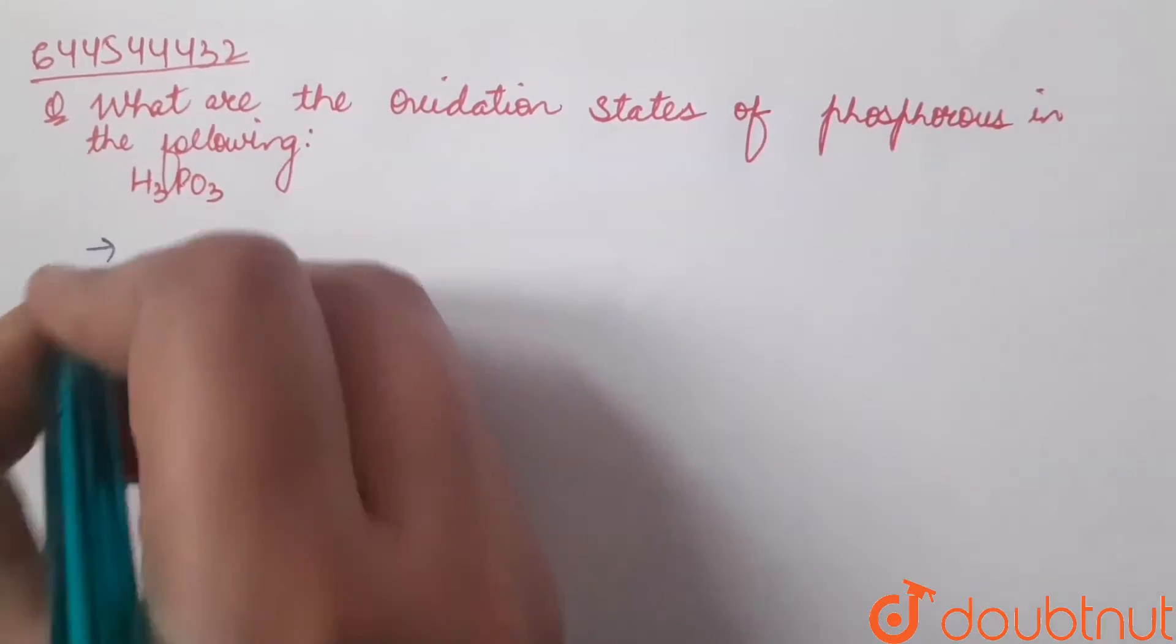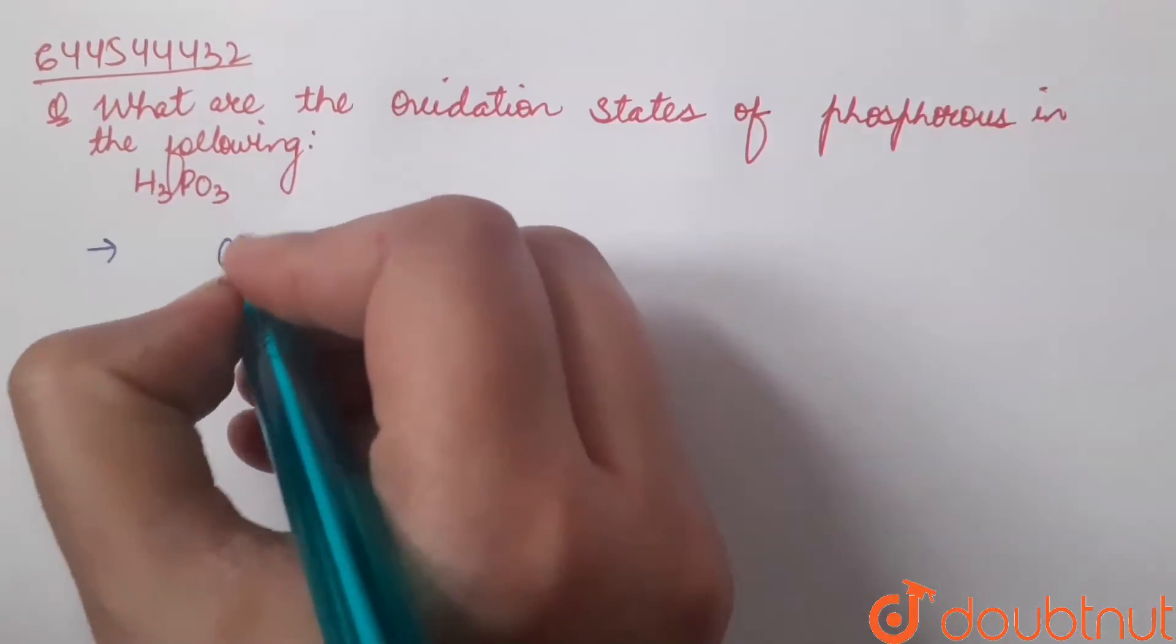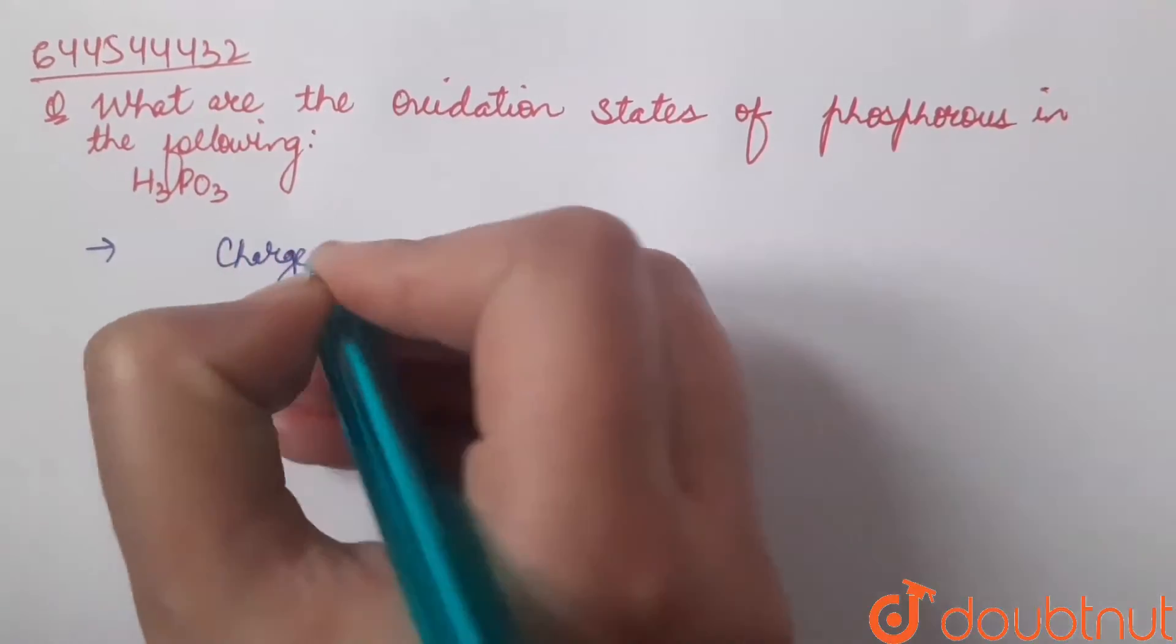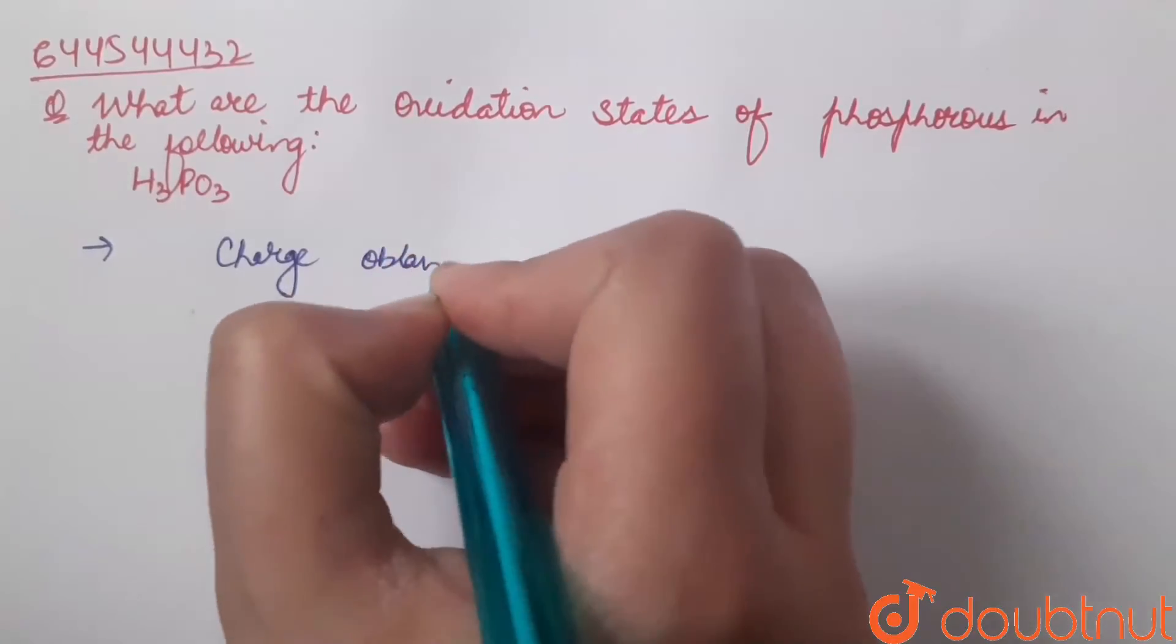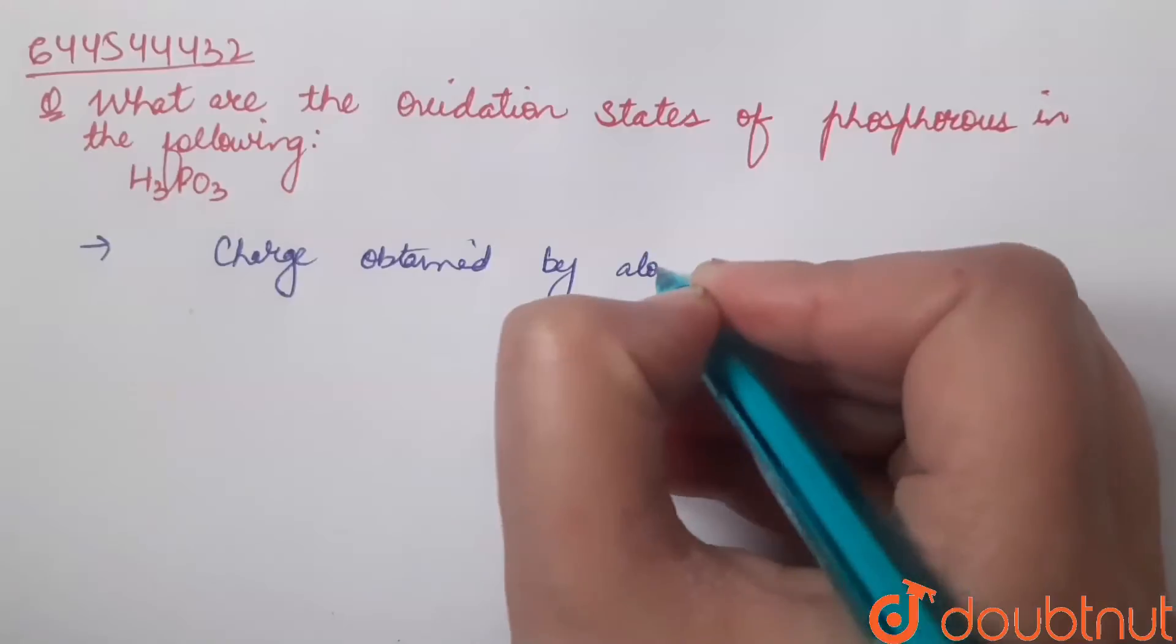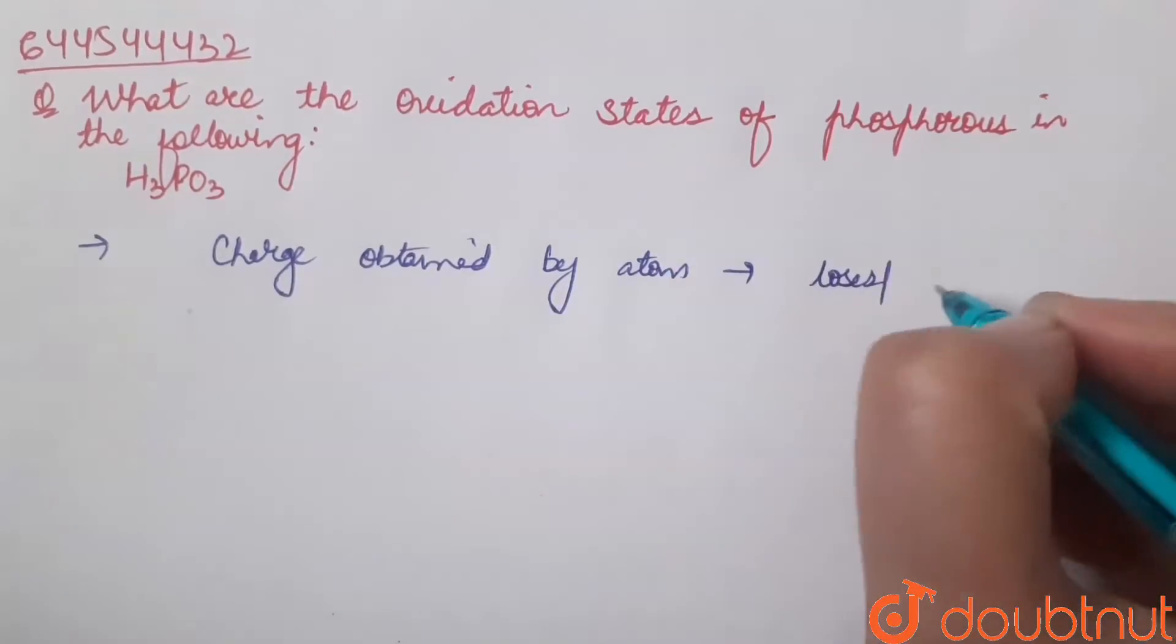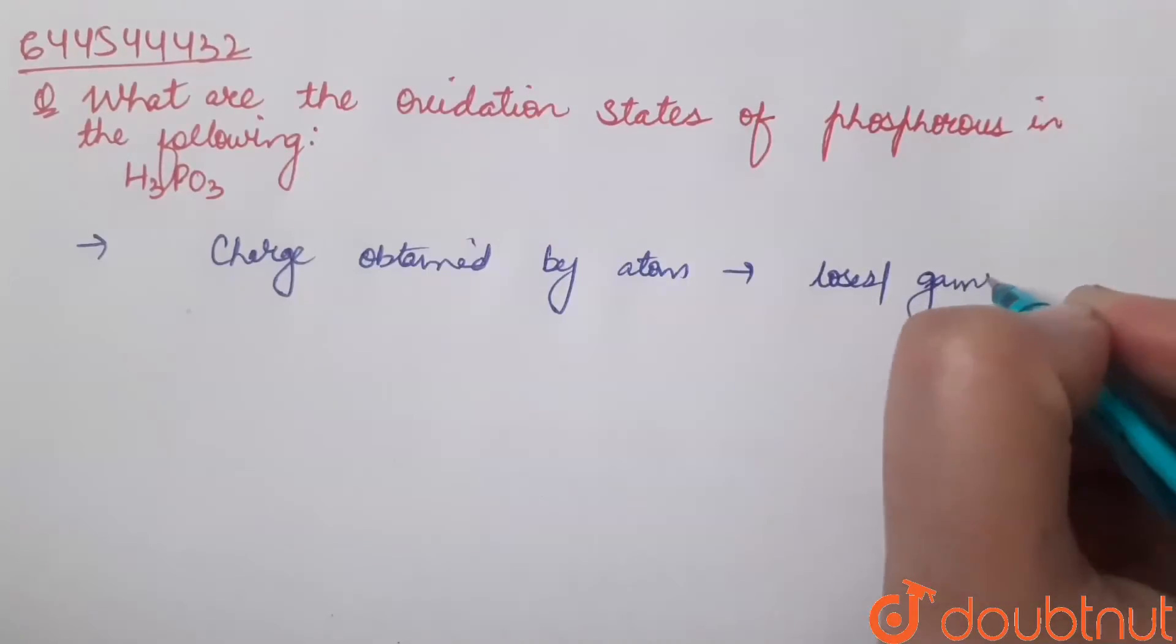Oxidation state, also called oxidation number, is the total charge obtained by an atom of an element when it loses or gains electrons.